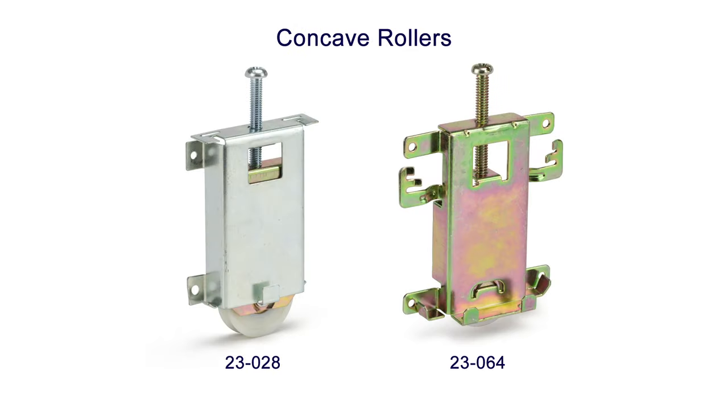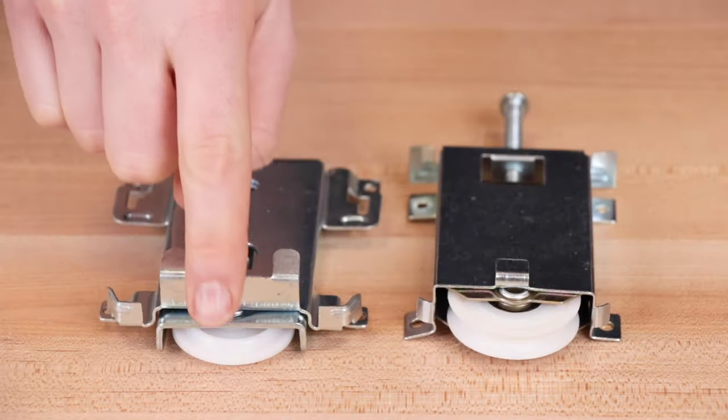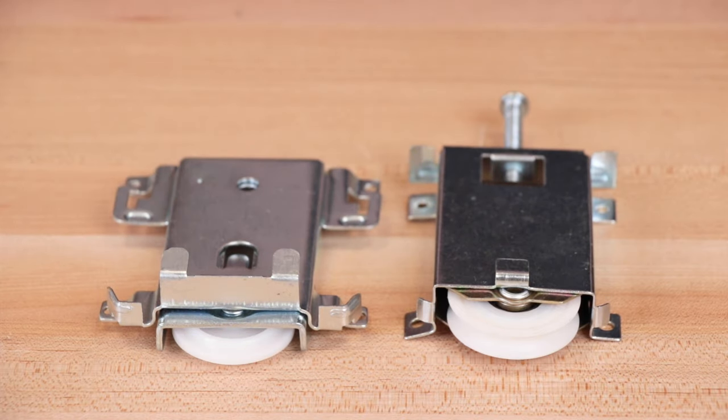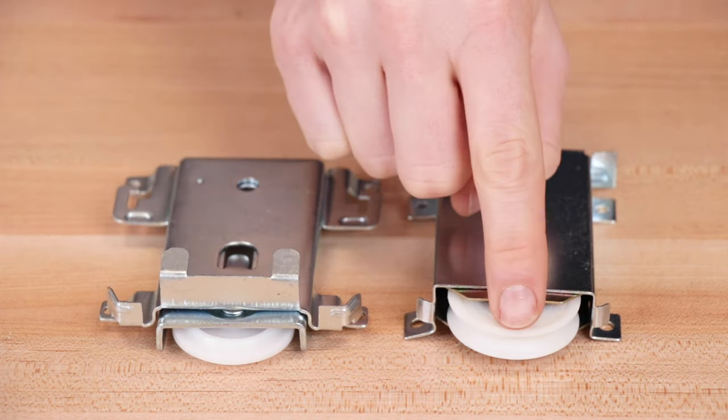Today we'll be displaying the two types of sliding mirror closet door rollers, convex and concave, and the tracks that work with them.